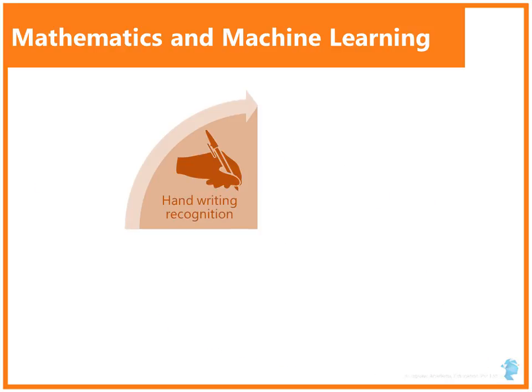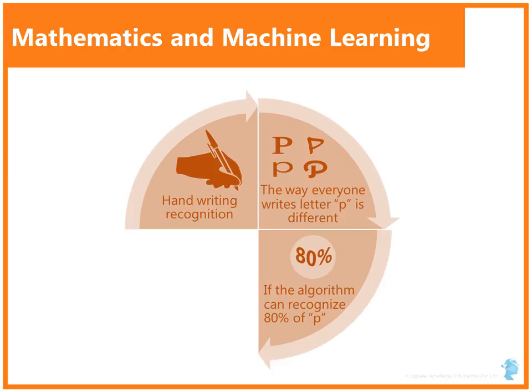Suppose you have a handwriting recognition software which will be powered by a machine learning algorithm. The way everyone writes the letter P is different. Therefore, we may say even if it can recognize P that is written by 80% of the people accurately, the software is good enough.